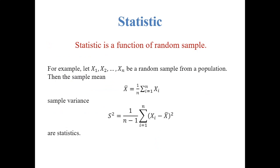Statistics is a function of random sample. For example, let x1, x2, ..., xn be a random sample from a population. Then the sample mean is defined as x-bar equal to 1 by n, summation i equal to 1 to n of xi. And sample variance s-square equal to 1 by n minus 1, summation i equal to 1 to n of xi minus x-bar whole square. These two are basically statistics. Statistics are pure functions of the random sample and do not depend on some unknown quantity.